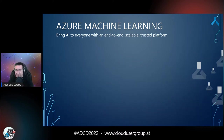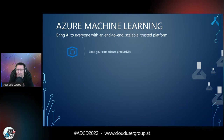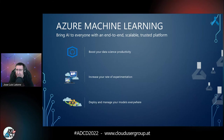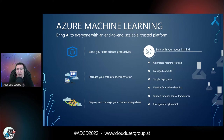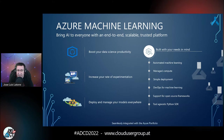Now we're going to Azure Machine Learning. From a Microsoft slide: it essentially says 'bring AI to everyone with an end-to-end scalable trusted platform.' It's really true. It's going to boost your data science productivity, increase how you experiment, and how you deploy and manage your models everywhere. It's built with the needs of a data scientist in mind — automated machine learning, managed compute, simple deployment, and MLOps roles. It also supports most open-source frameworks, including a tool-agnostic Python SDK.